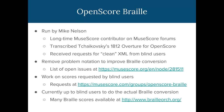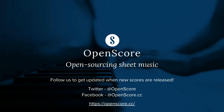Blind musicians can make requests at musescore.com/groups/openscore-braille to discuss Braille conversion issues and request scores in a Braille-friendly XML format. Currently blind users do the actual conversion themselves, but many Braille scores are available at brailleorch.org, run by MuseScore user Hu Haipeng from China. That's it from the OpenScore presentation at FOSDEM 2019 — subscribe for more videos and check out our social media on Facebook and Twitter for updates when new editions are released.